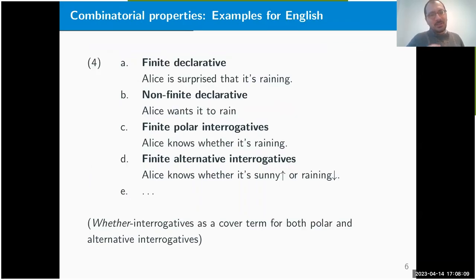In addition to the semantic properties, we also included combinatorial properties of attitude verbs. Some of them are illustrated on this slide: the ability to combine with finite declaratives, these are 'that' clauses like 'that it's raining'; non-finite declaratives like 'wants it to rain'; finite polar interrogatives like 'knows whether it's raining'; and so forth. We use 'whether interrogative' as a cover term for both polar and alternative.